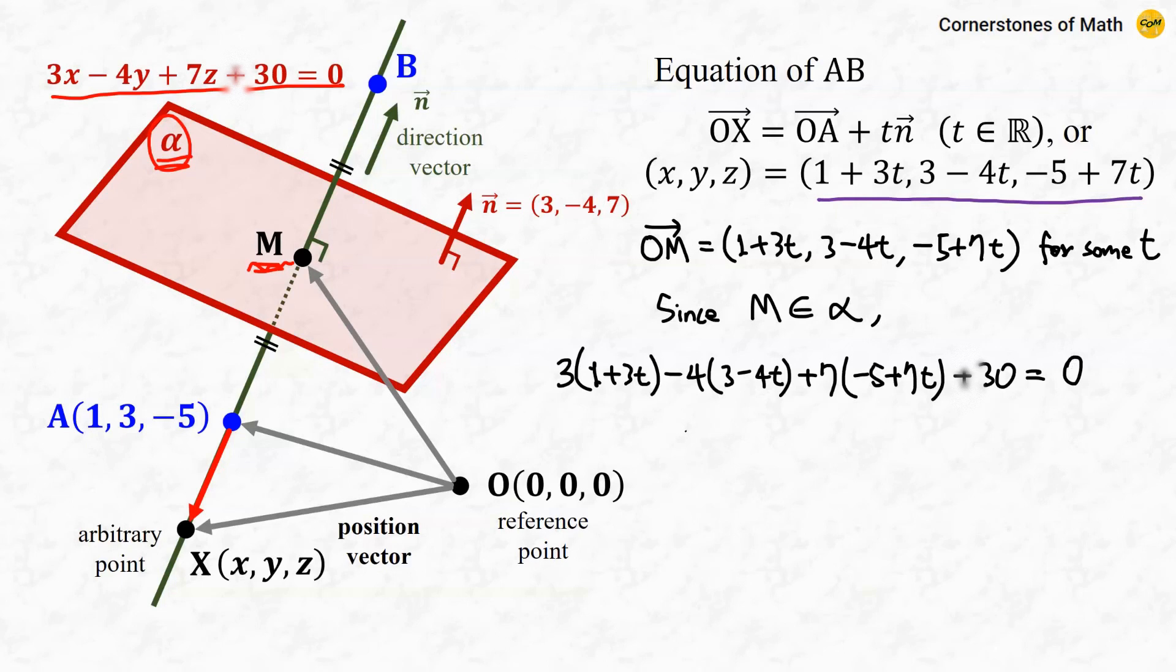And if you simplify this, it just becomes 74t - 74 = 0. Therefore, T = 1. So from this vector equation, when X = M, we have vector OM = vector OA plus vector N.